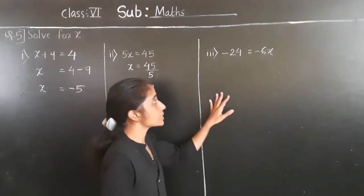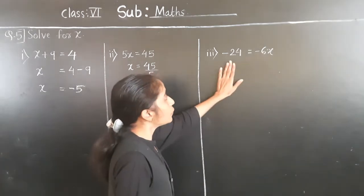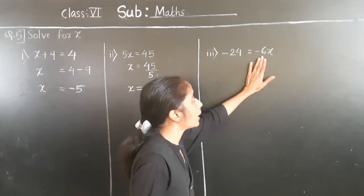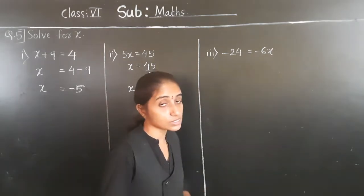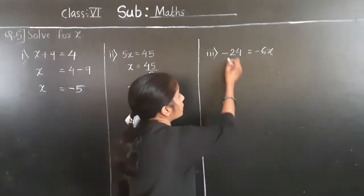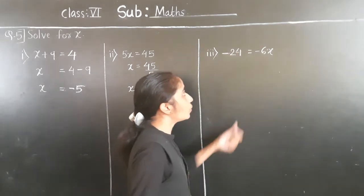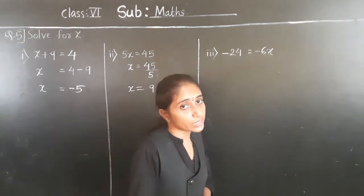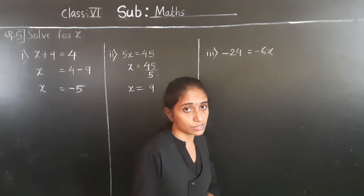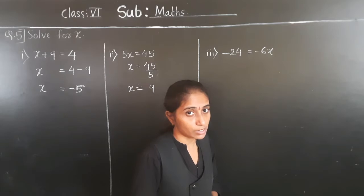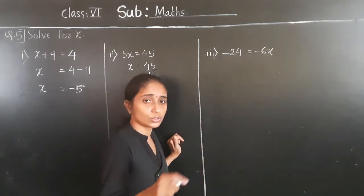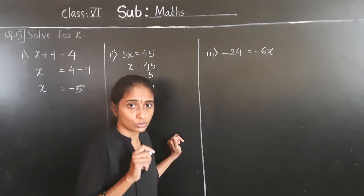Now let's solve the next example. Minus 24 is equal to minus 6x — this is a little different example. Now which number is with the variable? Minus 6 is with the variable. Minus 6 means minus 6 multiplied by x.